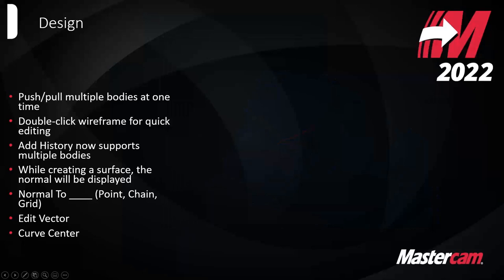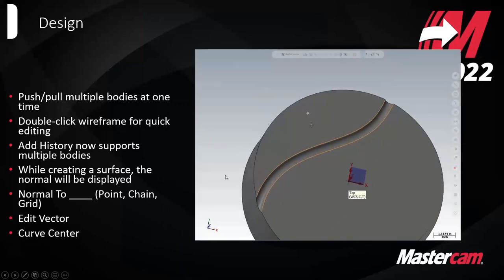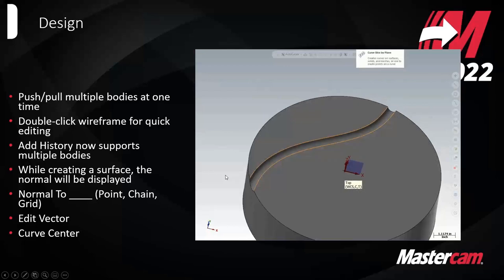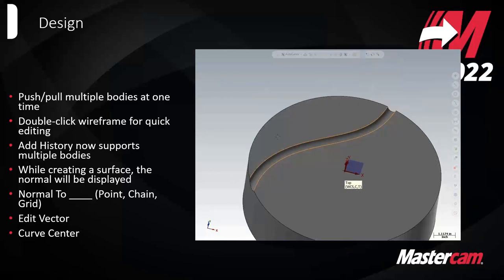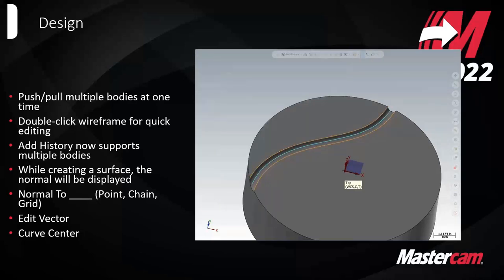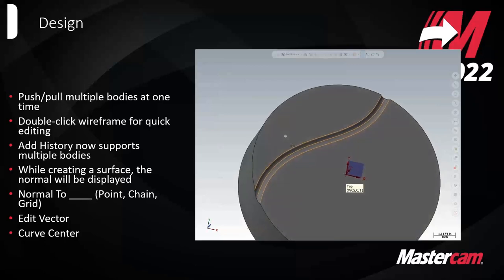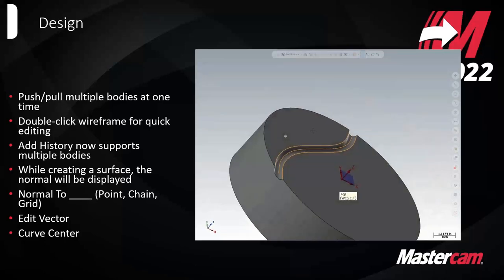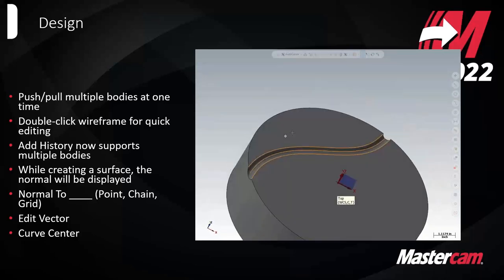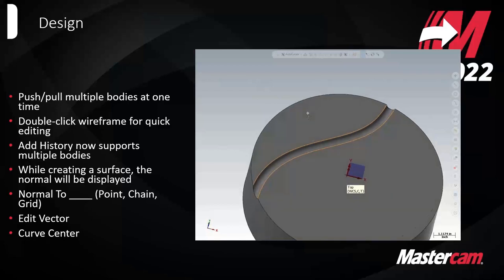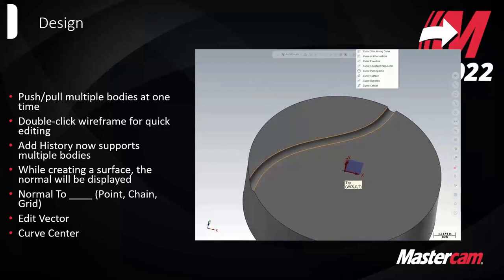This is most common if you're using the curve 5-axis tool path, and it'll allow you to modify those vectors on the fly where you'd have to use transform commands before. There's also now a curve center command. Say you've got a small oil groove and you don't want to run any comp on your tool — just run it down the center line. Before it was a pain to find the center point of a given channel, but now you can click both sides of the channel, say curve center, and it'll generate that wireframe for you.